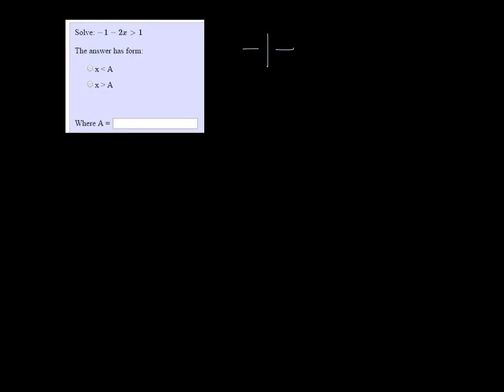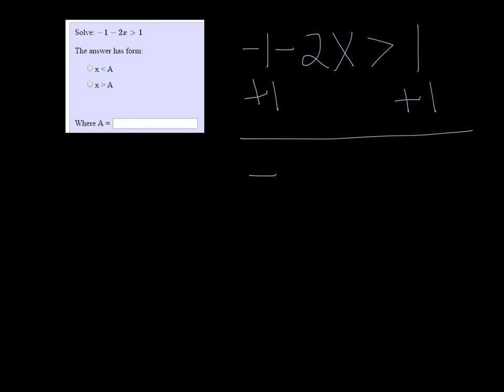We are solving negative 1 minus 2x greater than 1. To get x by itself, I'm going to want to add 1 to both sides. So we have negative 2x is greater than 2.